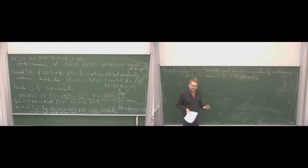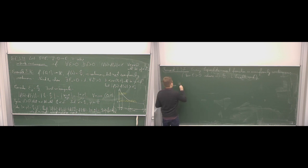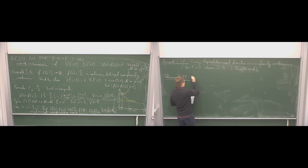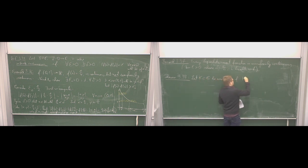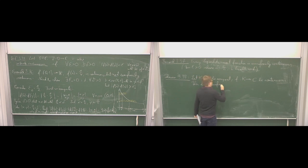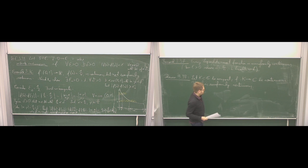I want to give you a theorem which is the main reason I'm studying this now. If we have compactness of our domain, we can say a useful statement about uniform continuity. Namely: let K be a compact subset of C, and F be a continuous function from K to C. Then we automatically get that F is uniformly continuous. This is the easiest way to get uniform continuity: verify continuity and check that the domain is compact.